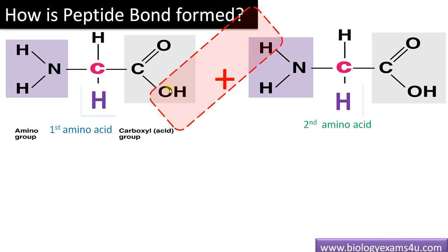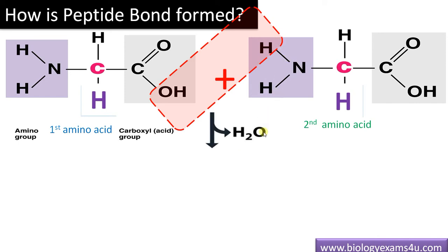The carboxyl group of the first amino acid — the OH of the carboxyl group — reacts with the hydrogen of the amino group. Water is released and the rest forms the peptide bond. Now we have C double bond O, N, H.